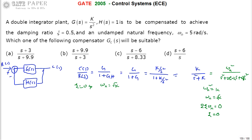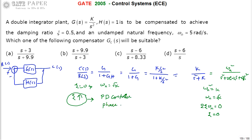We need to achieve ζ = 0.5 and ωn = 5. The damping ratio must be improved from zero to 0.5. If we choose a proper K value, ωn = 5 can be achieved. To improve the damping ratio without affecting the type of the system, we should use a proportional plus derivative (PD) controller, which is equivalent to using a phase lead compensator. A phase lead compensator can improve damping ratio with a slight improvement in ωn.